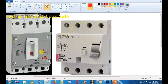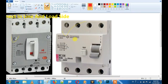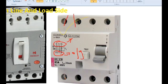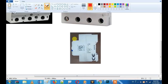If you have RCCB, the incoming terminal is on the right side. The starting terminal numbers are 1, 2, 3. The right side is the incoming terminal and the left is the output terminal. This is the RCCB.